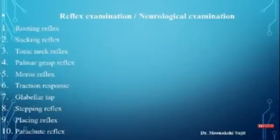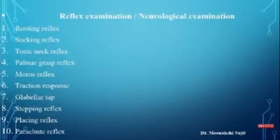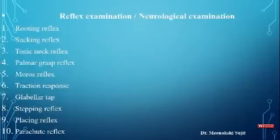Now, which types of reflexes do we examine in a baby? Not only these 10, but still many more reflexes are present in a baby. However, these 10 are mainly examined in a newborn, as they are the main way to identify neurological condition. Those 10 reflexes are: rooting reflex, sucking reflex, tonic neck reflex, palmar grasp reflex, Moro reflex, traction response, glabellar tap, stepping reflex, placing reflex, and parachute reflex.